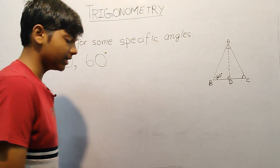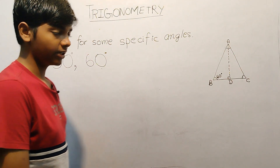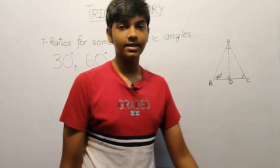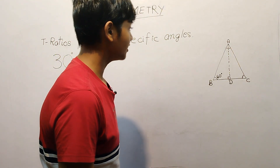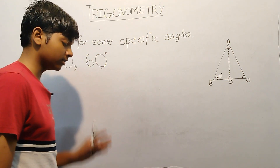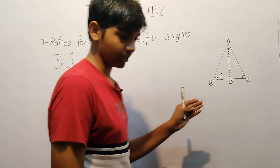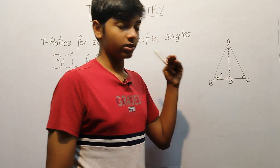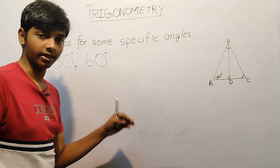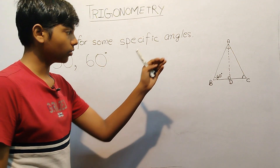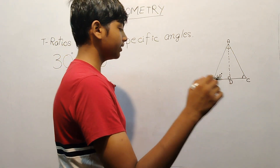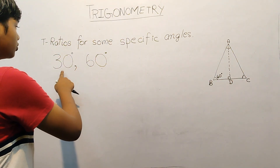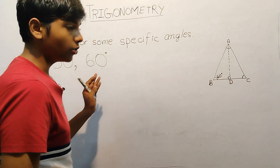Hello everyone, welcome back. Today we'll be discussing the trigonometric ratios for the angles 30 degrees and 60 degrees. That is, we'll be finding sine 60 degrees, sine 30 degrees, and all the ratios — cos, tan, secant, cosecant, and cot — for the values of 30 degrees and 60 degrees.